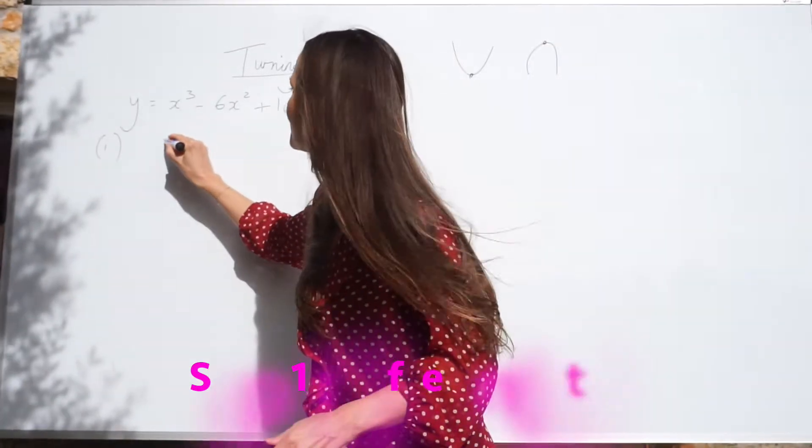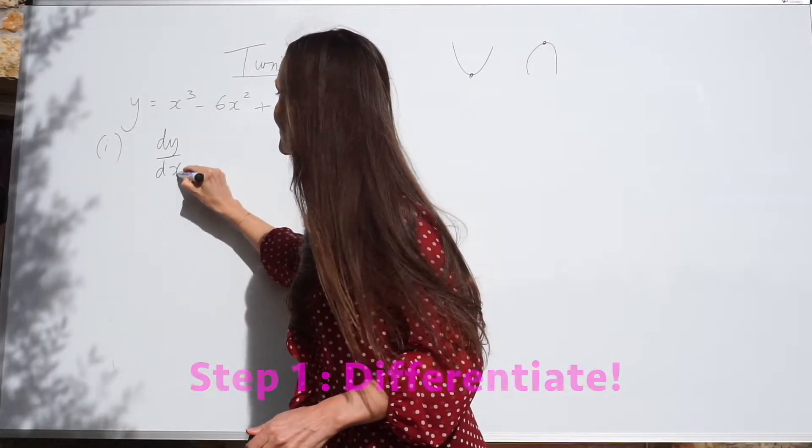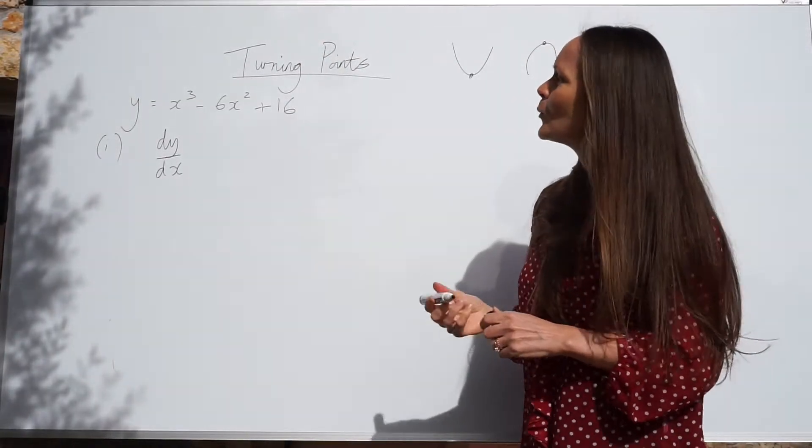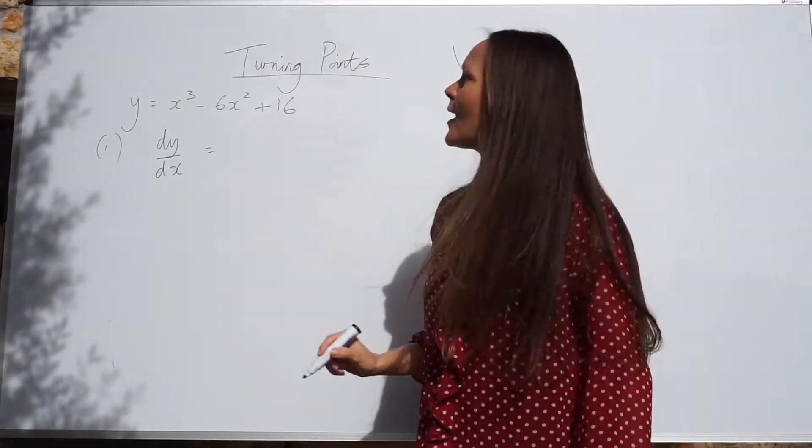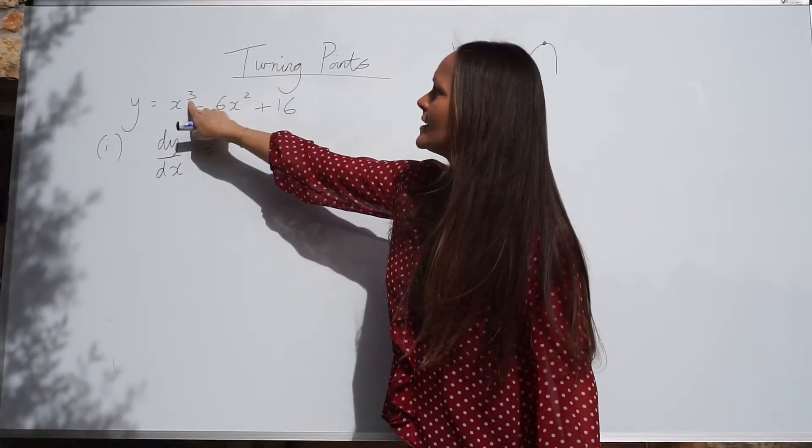So from there you can solve an equation to work out the coordinates. So that's what we're going to do. So I'm going to start by finding dy/dx, I'm going to differentiate that curve. So what you need to do is look at the power on the first term of x. So it's cubed, it's 3.